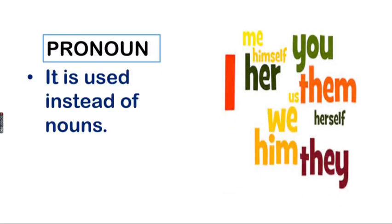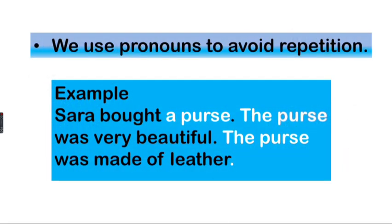A pronoun is used instead of a noun. We use pronouns to avoid repetition. For example: 'Sara bought a purse. The purse was very beautiful. The purse was made of leather.' Here we have repetition of 'the purse.' To avoid that, the first time we use the noun, then we replace it with a pronoun: 'Sara bought a purse. It was very beautiful. It was made of leather.'